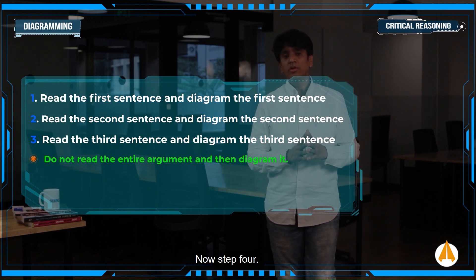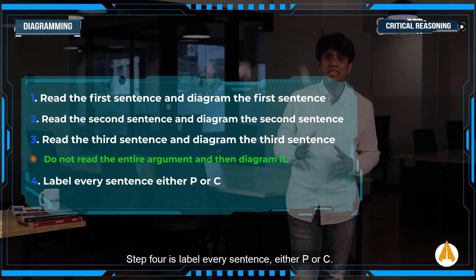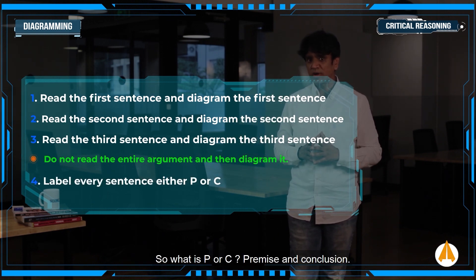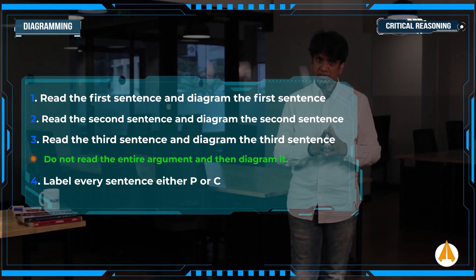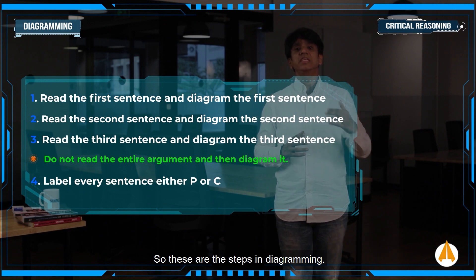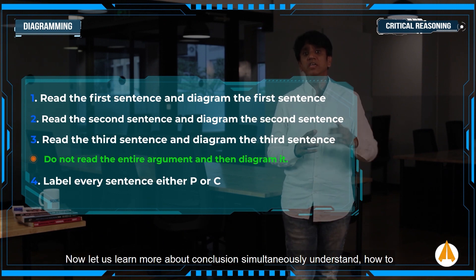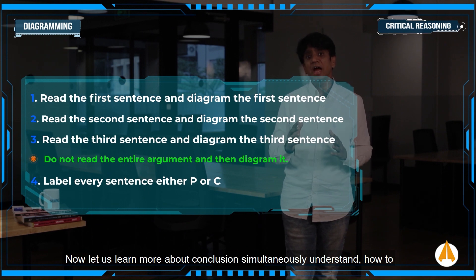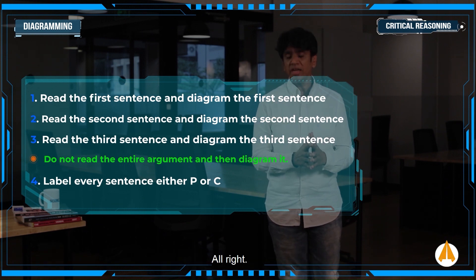Step four: label every sentence either P or C — that is, Premise or Conclusion. These are the steps in diagramming. Now let us learn more about conclusions, and simultaneously understand how to implement the process of diagramming.